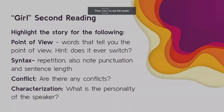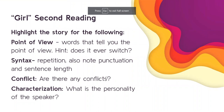Okay, for the second reading, you're going to read it on your own and highlight for the following. Point of view — words that tell you the point of view. Hint: does it ever switch? If it does, that's important and you should highlight that. Syntax: repetition, and also note punctuation and sentence length in this story specifically, and make inferences as to why you think the author chose to write it that way. Conflict: are there any conflicts in this story? Highlight things you think are conflicts. Also characterization — what is the personality of the speaker? Highlight for that and make inferences as to the kind of person you think the speaker is.